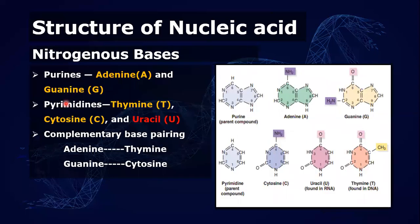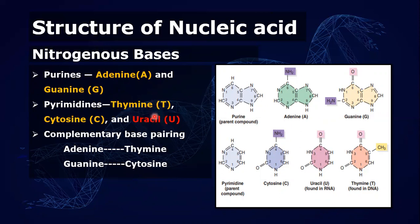Now, regarding the nitrogenous bases — purines include adenine and guanine only. Pyrimidines have three: thymine, cytosine, and uracil. However, uracil is found only in RNA, and thymine is found only in DNA. In RNA, thymine is replaced with uracil.